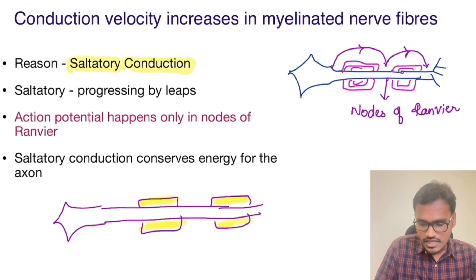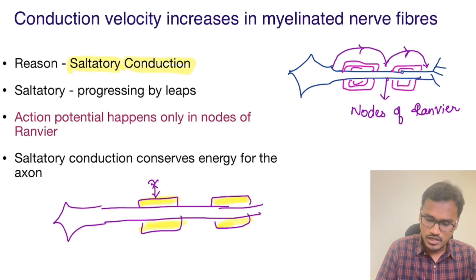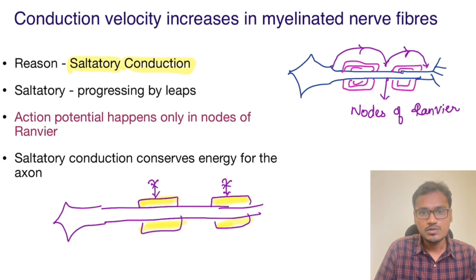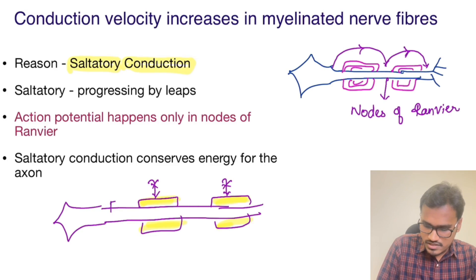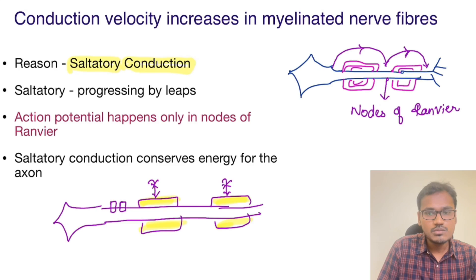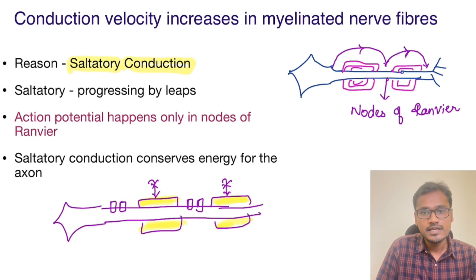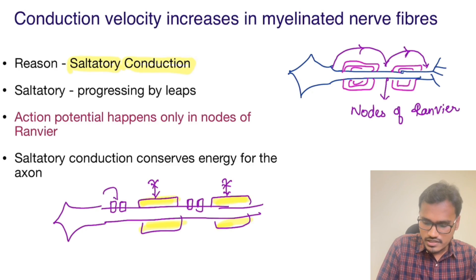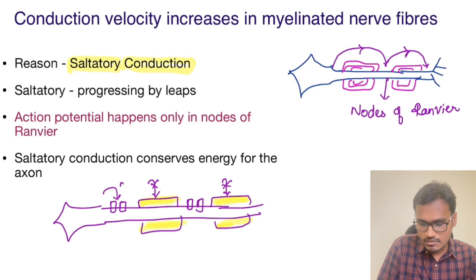The sodium channels responsible for the action potential are present only at the nodes of Ranvier. So suppose there is an impulse and there is an entry of sodium ions — it is going to produce an action potential only in this region.